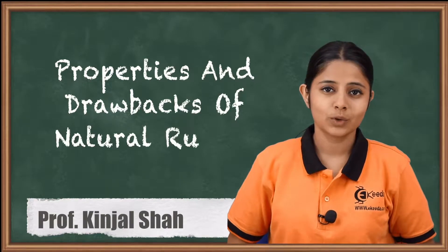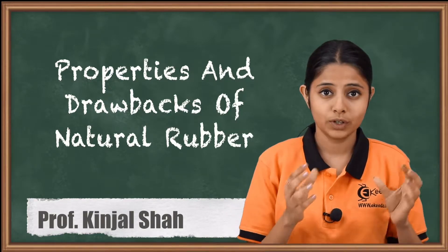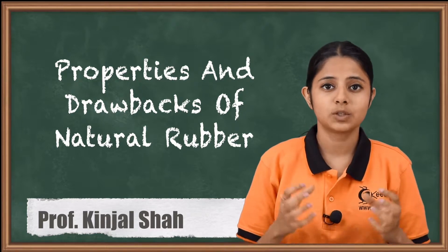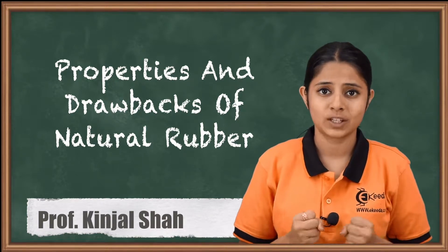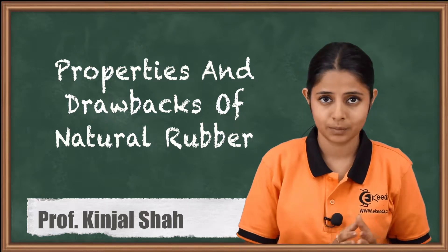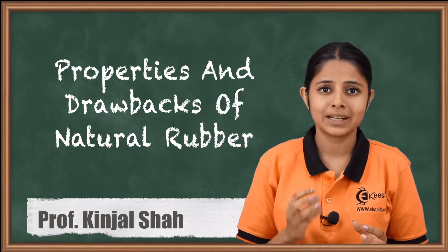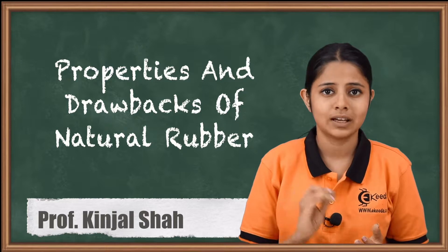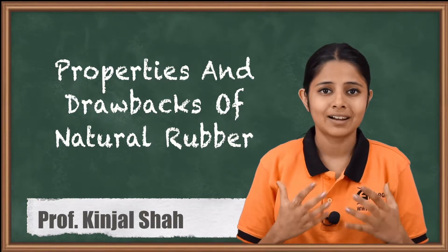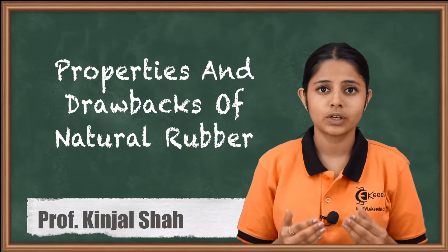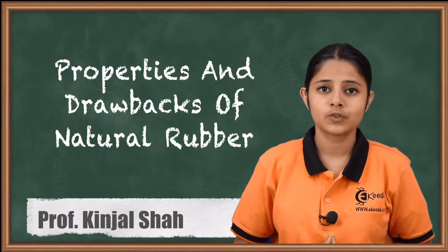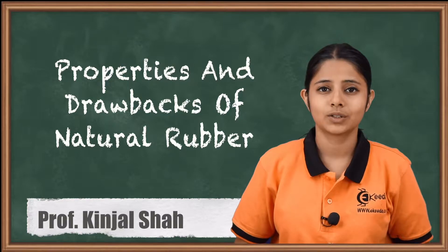Hello friends. In today's session we are going to study the different properties and drawbacks of natural rubber. Natural rubber has various properties but there are many drawbacks as well, and that is the reason why we need to vulcanize the rubber. Vulcanization is the addition of certain chemicals or elements like sulfur to enhance the properties of rubber. But first we should know the properties and drawbacks of natural rubber.